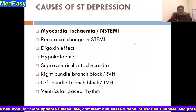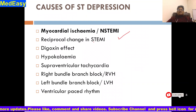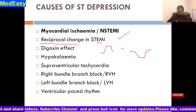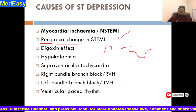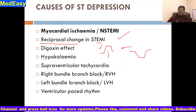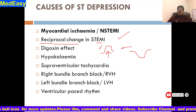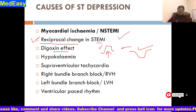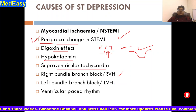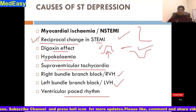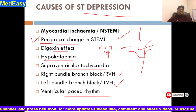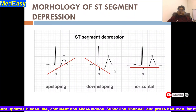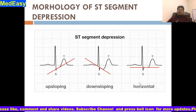Coming to the causes of ST depression: the most important cause is myocardial ischemia. Other causes include reciprocal changes in ST-elevated MI — meaning when ST is elevated in one lead, the opposite lead shows ST depression. Additional causes include digoxin effect, hypokalemia, supraventricular tachycardia, right bundle branch block, left bundle branch block, and ventricular paced rhythm. The morphology of ST depression can be up-sloping, down-sloping, or horizontal.